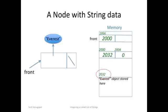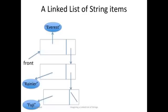Okay, on to an example that takes it to the next level. Here's a linked list that contains three strings. The first node holds a pointer to the string object Everest, the second to the string object Rainier, and the third to the string object Fuji.